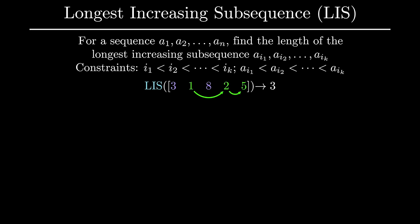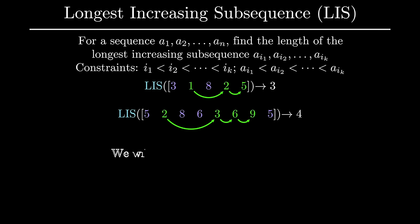Now that the problem is more clear, take a second to see if you can find the longest increasing subsequence and its length for the following sequence. The correct subsequence starts at 2, followed by 3, 6, and 9, with a total length of 4. One important note: to keep things simple, we will focus on finding the length of the sequence, rather than finding the sequence itself.